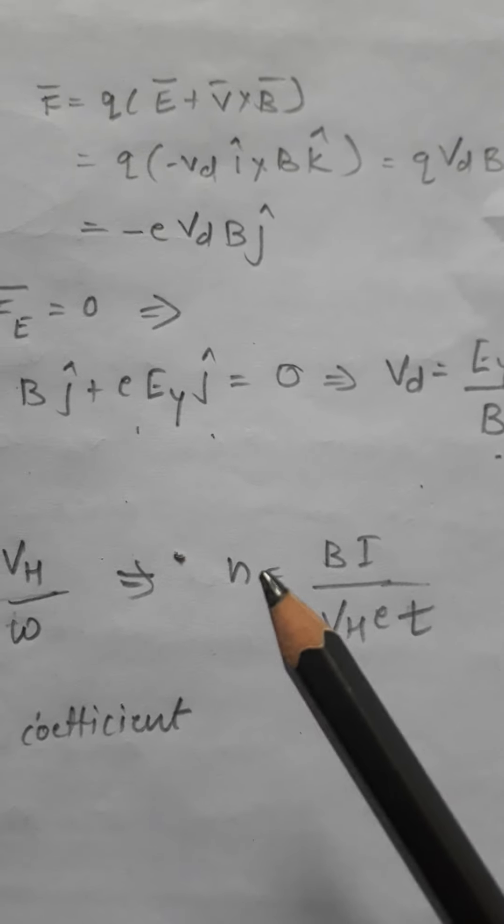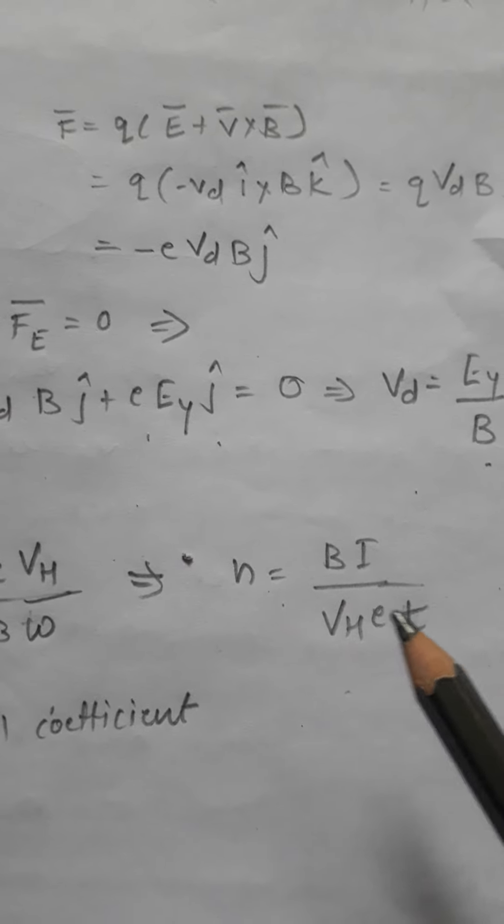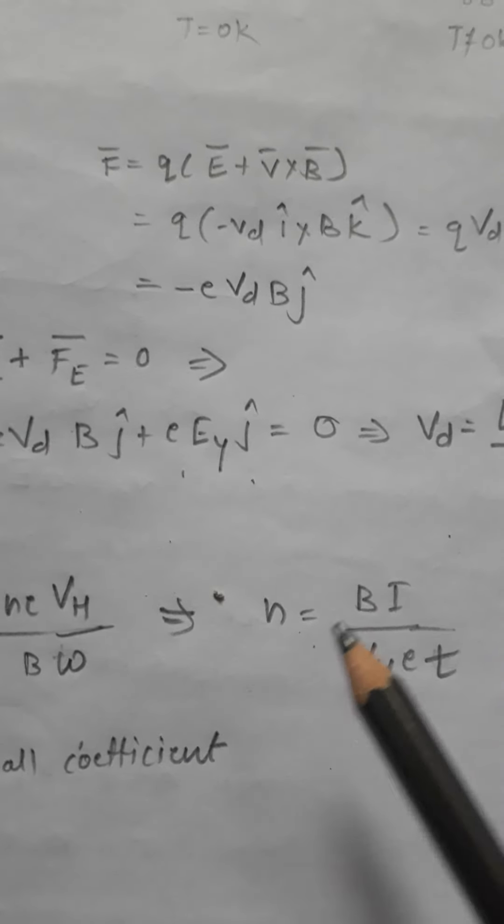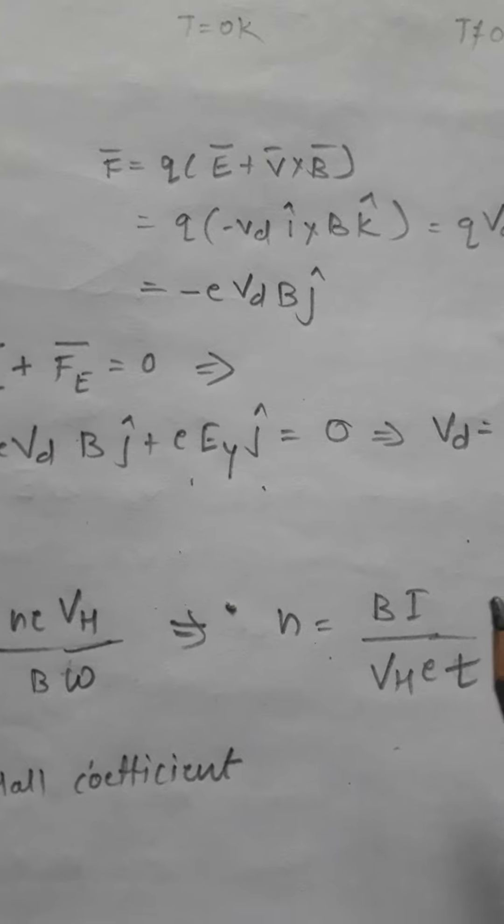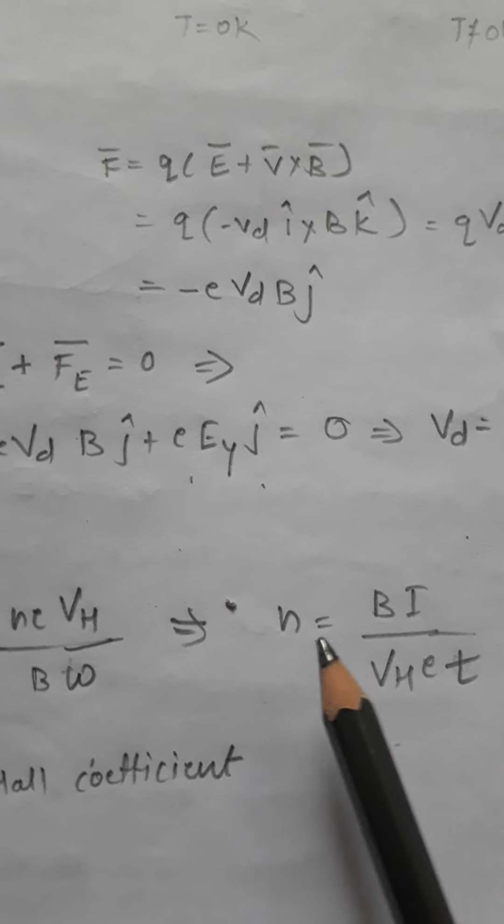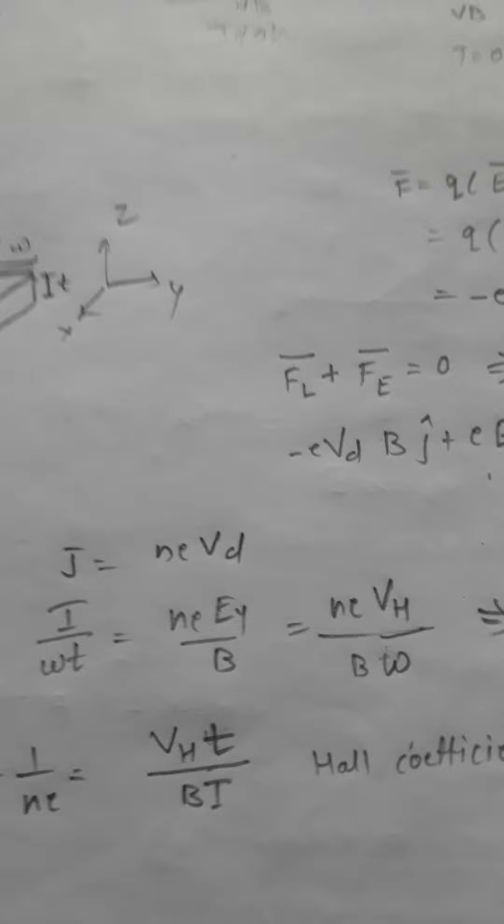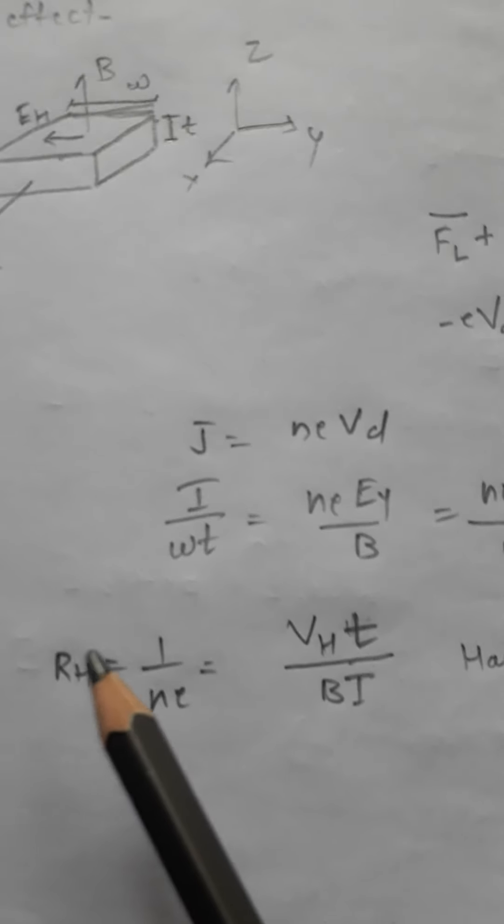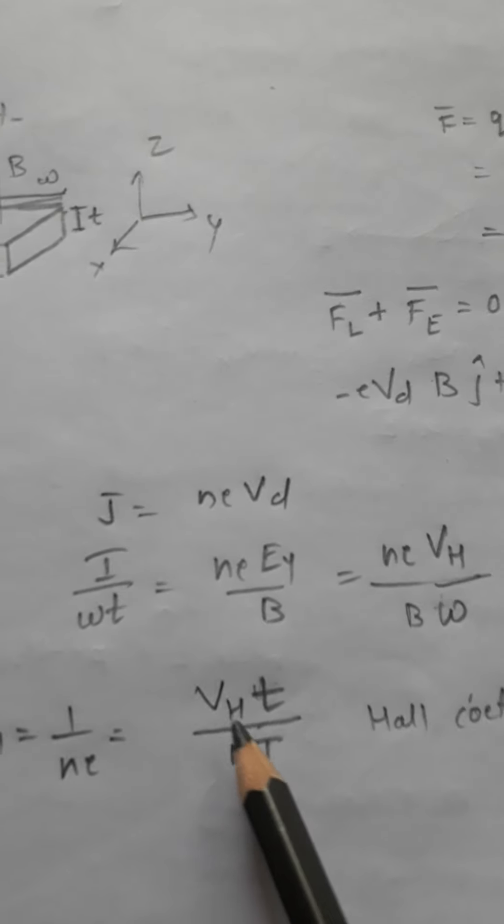If we simplify this, we get the charge density n = BI/VHed. This is a very important expression because all the quantities on the right-hand side can be measured, giving us the charge density. We define the Hall coefficient as RH = 1/ne = VHt/BI.